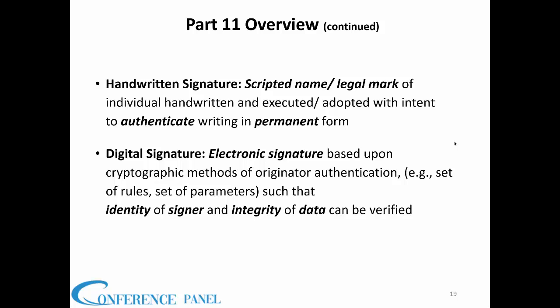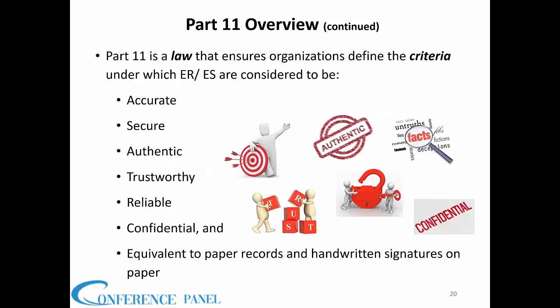Just like the handwritten signature, the digital or electronic signature must also include the identity of the signer authenticated against their credentials, and the integrity of the data verified. So Part 11 is a law, and you have to define the criteria under which your electronic records and signatures are considered to be accurate, secure, authentic, trustworthy, reliable, and confidential.